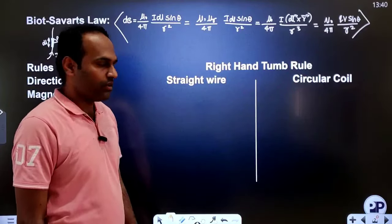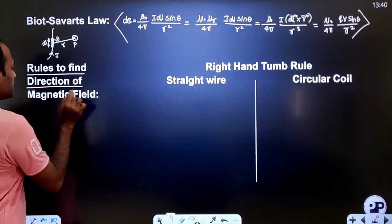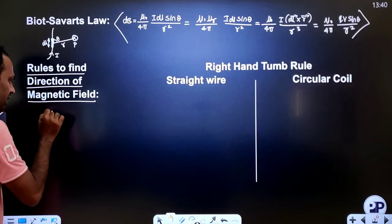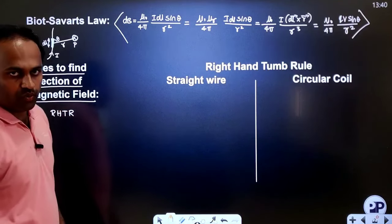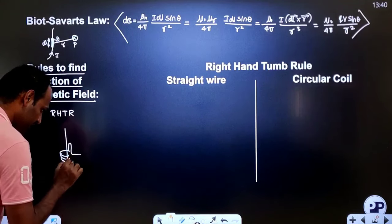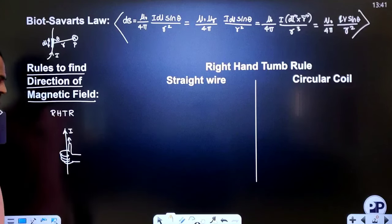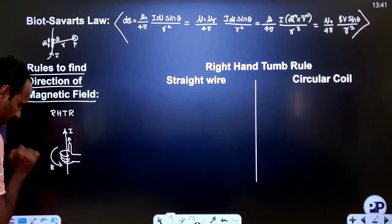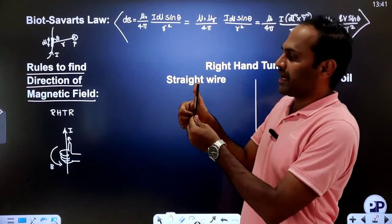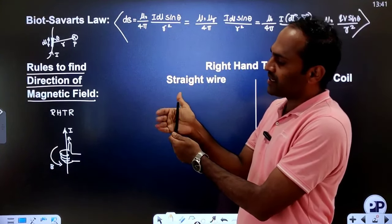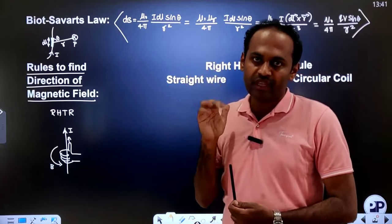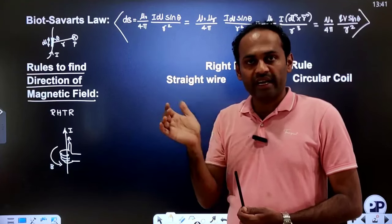To find the direction of the magnetic field, we use the right-hand thumb rule. It states: hold the wire such that your thumb is extended in the direction of current; the remaining four fingers will indicate the direction of the magnetic field. For a straight wire with current flowing upwards, hold your thumb upward and curl your four fingers — they indicate the circular magnetic field direction around the wire.